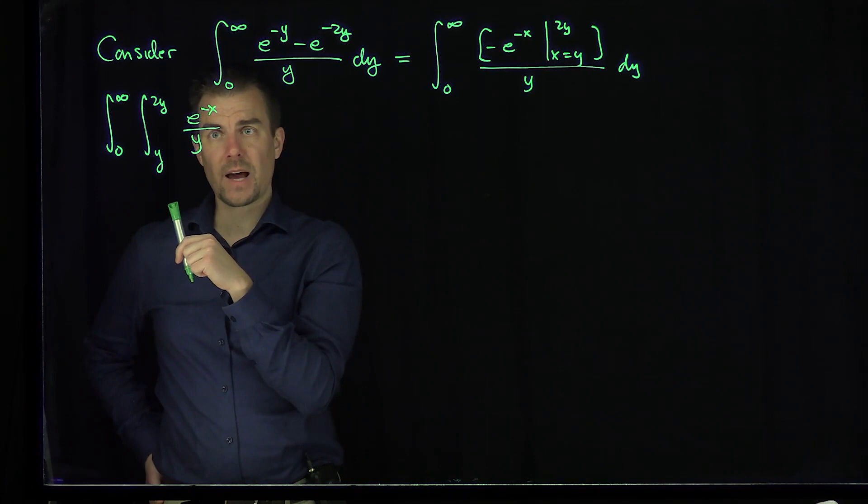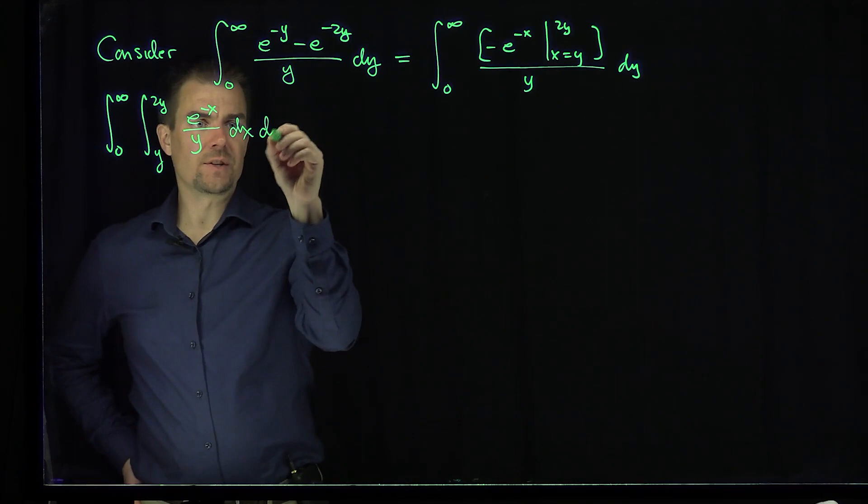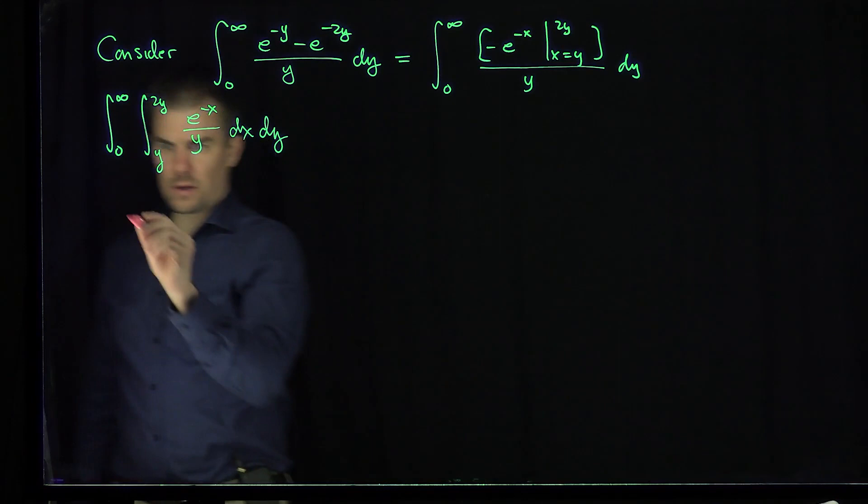Let's check to make sure that works. The antiderivative with respect to x of this thing would be -e^(-x), so it checks out. Now let's flip the limits of integration, so let's sketch our region.